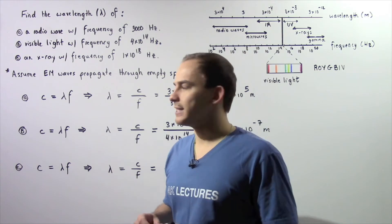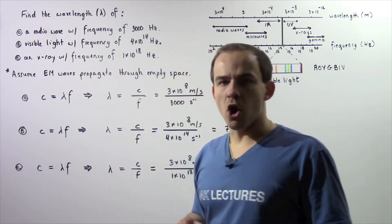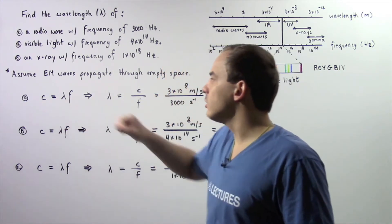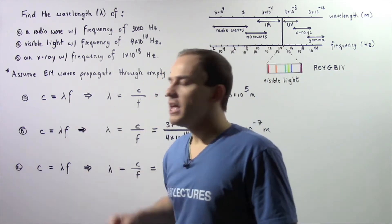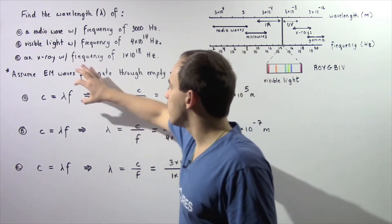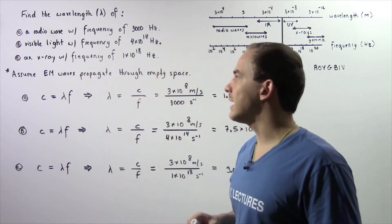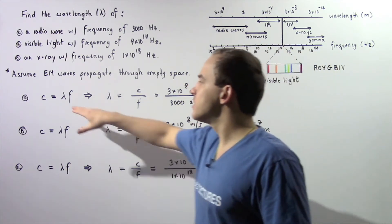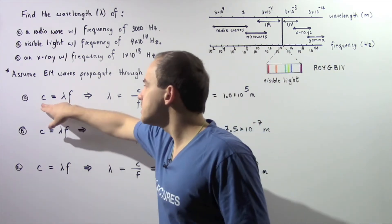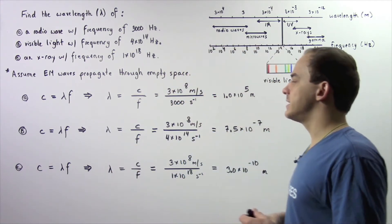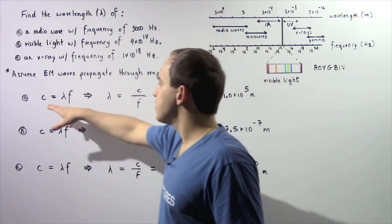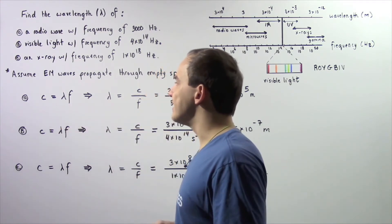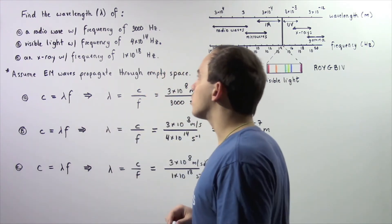Let's begin with part A. In each part we essentially want to use the following equation. We know that if we take the product of the wavelength and the frequency of our electromagnetic wave propagating through empty space, that is equal to the speed, c, of our electromagnetic wave. So we take this equation in each case and we rearrange it and solve for our wavelength.